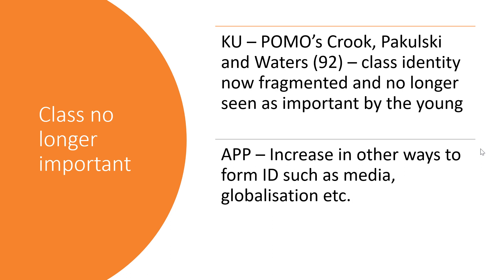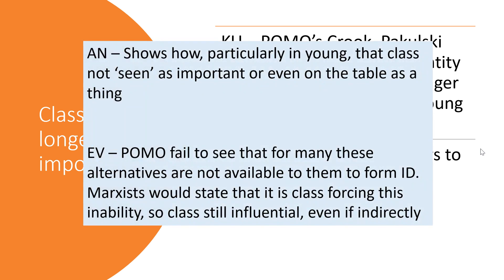There's an increase in other ways to form identity beyond class, through the media, globalization, and access to other cultures. This helps us understand how, particularly for the young, class is seen as less important — we don't necessarily identify by class anymore. However, postmodernism fails to acknowledge that for many there is no alternative: they can't access identity from anything other than their class because they lack wealth and opportunities — particularly the underclass. Marxists would counter that class is still influential indirectly, forced on us through socialization and media representations, such as shows like Jeremy Kyle reinforcing class identities.